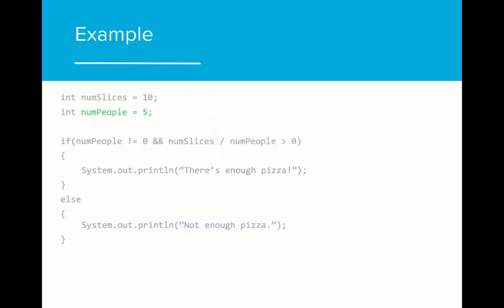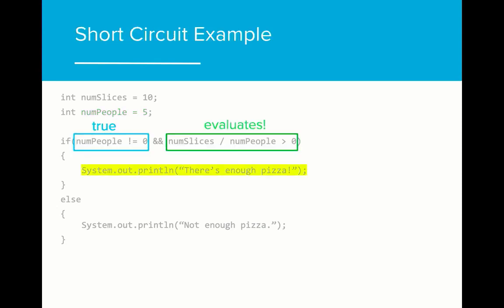If we change the number of people to five, then the program will change. When the first condition of the expression is evaluated, num people is not equal to zero evaluates to true as five is not equal to zero. And then the second expression is tested. In this case, the result of the second expression is true as num slices 10 divided by num people 5 is greater than zero. If the value of num people were greater than 10 and num slices stayed the same, the second expression would evaluate to false and the else statement would be printed.